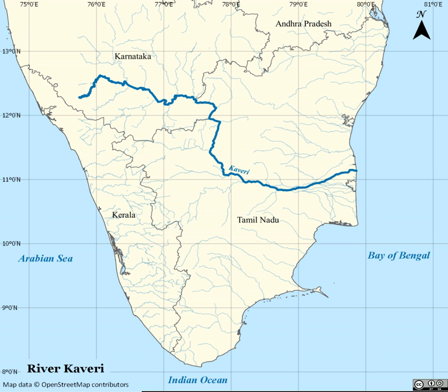The Kabini River, a tributary of Kaveri, joins the Kaveri at Tirumakudal Narasipura, where Triveni Sangama takes place along with the mythological river Spatika. The Moyar River, an east-flowing river, originates in the Mudumalai, Bandipur, and Wayanad National Parks, draining the Nilgiri Hills in Tamil Nadu and Karnataka, and is one of the tributaries to the Kaveri River.